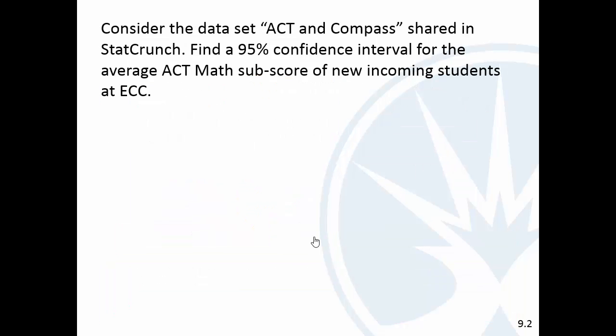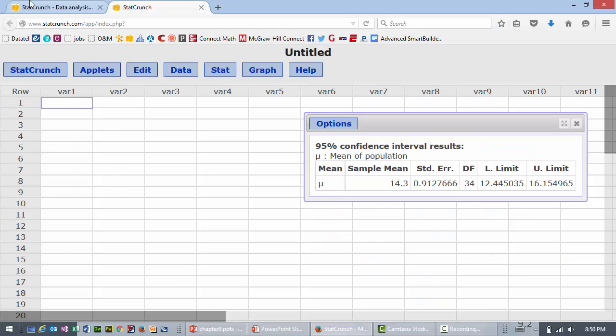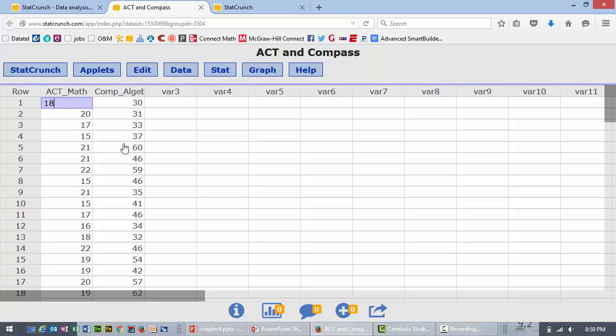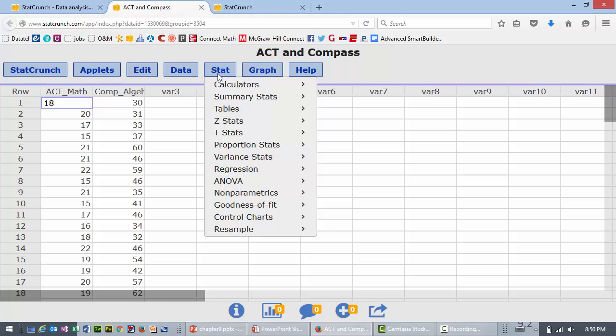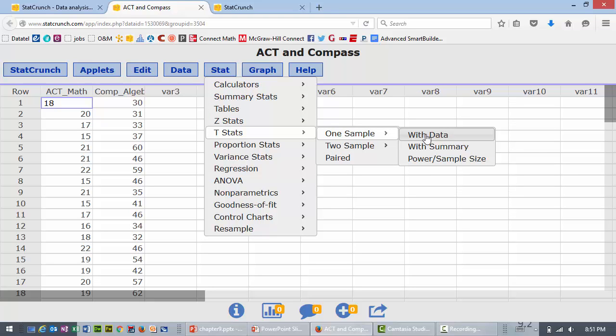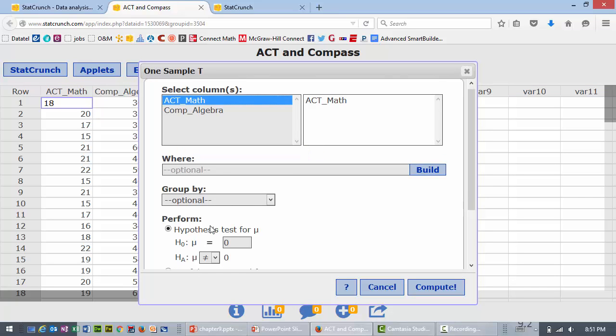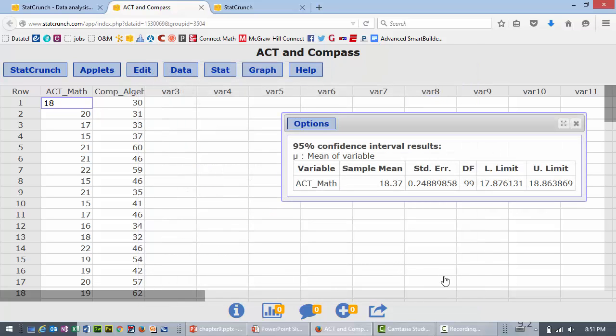So, let's try another one here. We're going to use some data this time. We've got this ACT and Compass data. We're going to try to find a 95% confidence interval for the average ACT math subscore for new incoming students. So, I've got it over here, ACT and Compass. And so, we have ACT math score. I don't know if you remember the background here. This is a sample of 100 new recent high school graduates. I had the full data set of, gosh, I don't remember how many thousands of students it was, and then this was just a random sample of 100 of them. So, we're going to do stat, tstats, one sample, but now I have the data. So, with data. And we want to do columns, ACT math. We want a 95% confidence interval again, and then we'll hit compute.